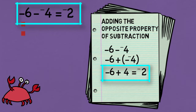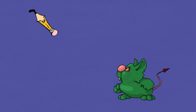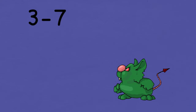Let's look at a few more examples using both the takeaway model with my tiles, and the adding opposite property of subtraction using pencil and paper. What if I had the problem 3 minus 7? I would start off with 3 positive tiles.